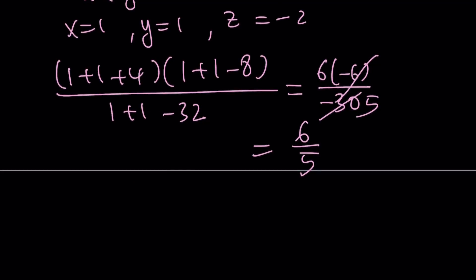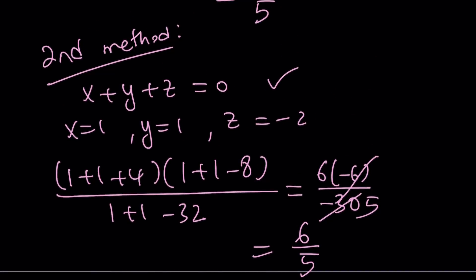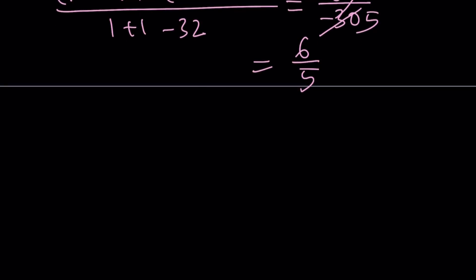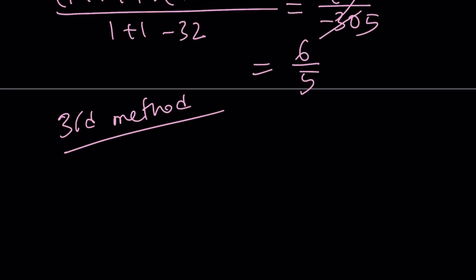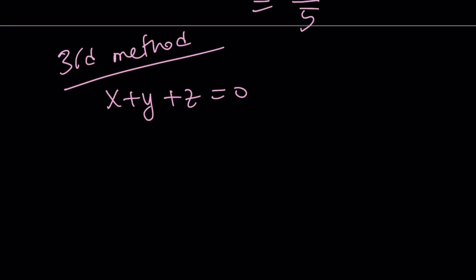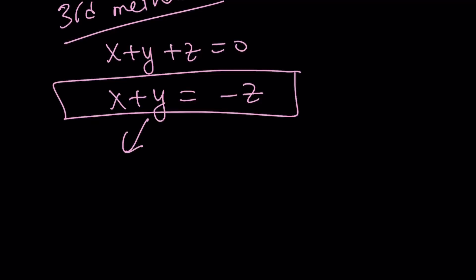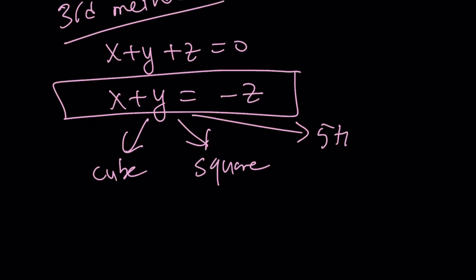The second method is obviously easier, but on an exam it probably won't be accepted — though for a multiple choice question it definitely works, and some math competitions are multiple choice. As an alternative third method: since x plus y plus z equals zero, you can solve for x plus y and replace it with negative z, then raise that to the second, third, and fifth powers, combine expressions, and you'll get 6 over 5 again.